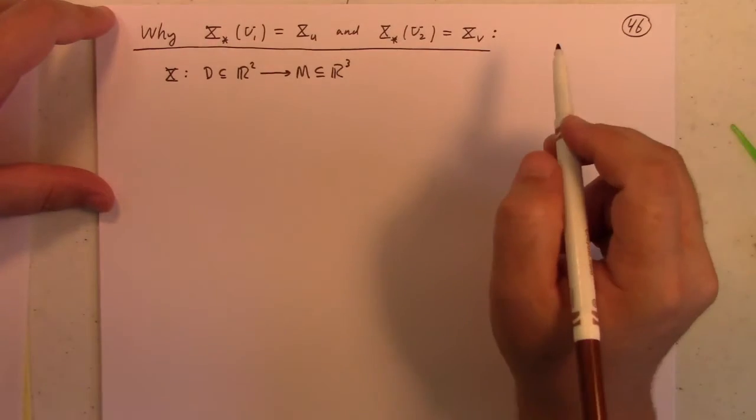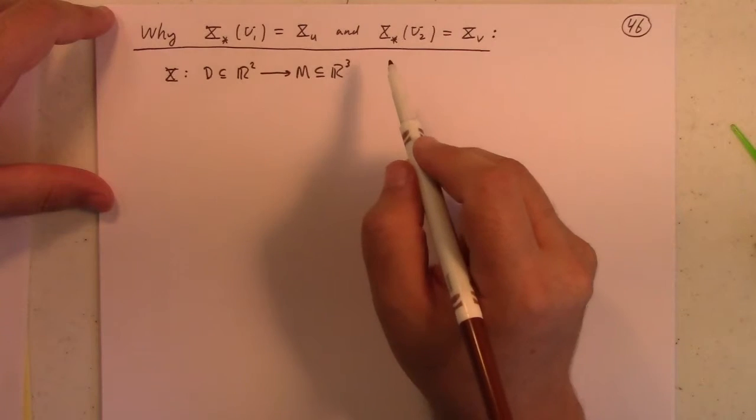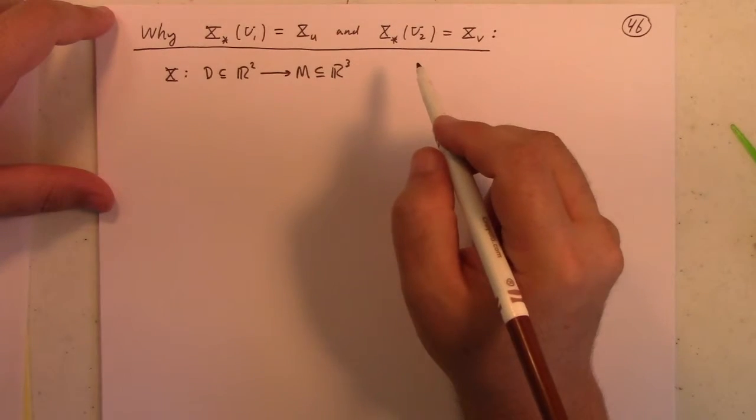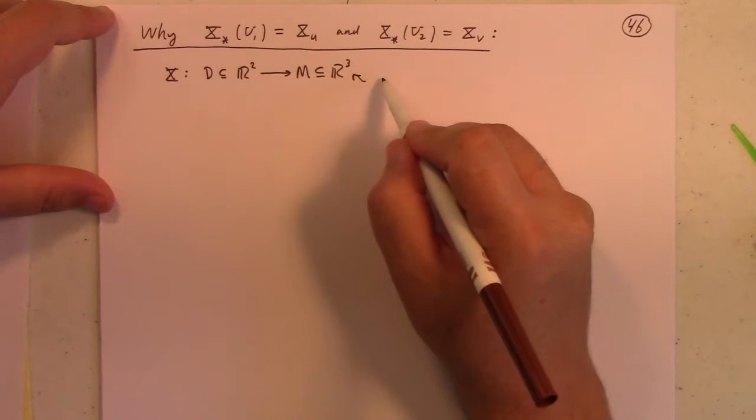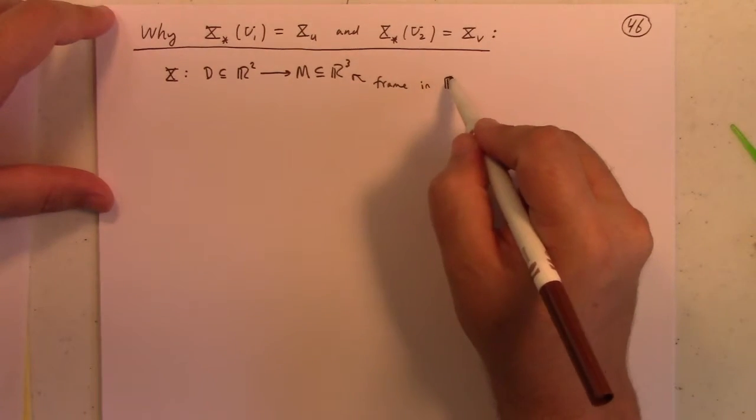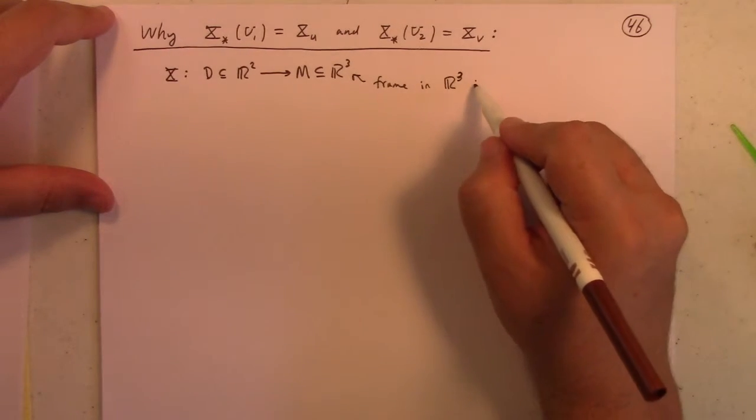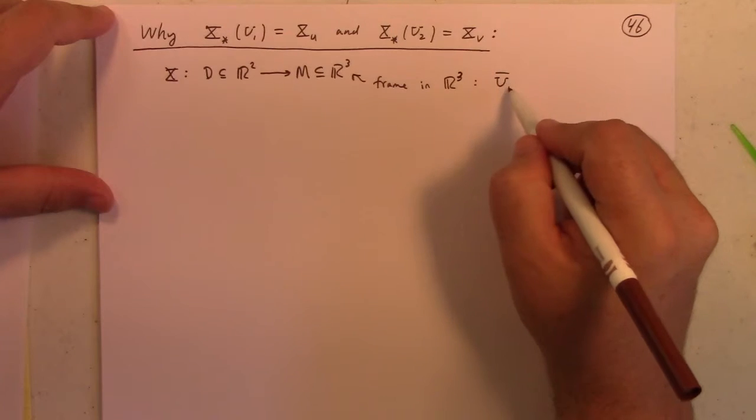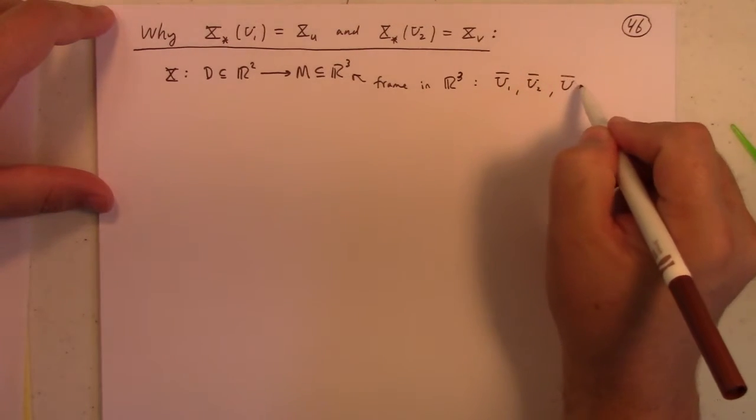So because I want to talk about the Cartesian frame both in R2 and R3, I probably should use a different name for the frame in R3. Let's say that the frame in R3 is U1, U2, U3.